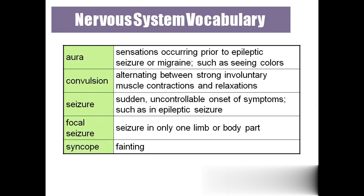'Aura' refers to the sensations that occur prior to an epileptic seizure, fits, or migraine. Migraine is a chronic type of headache. Before the onset, the person will have some sensations, like seeing colors — like prior warnings. If they experience these abnormal things before getting fits, that means they are about to get an episode. We call these prior warnings 'aura.'